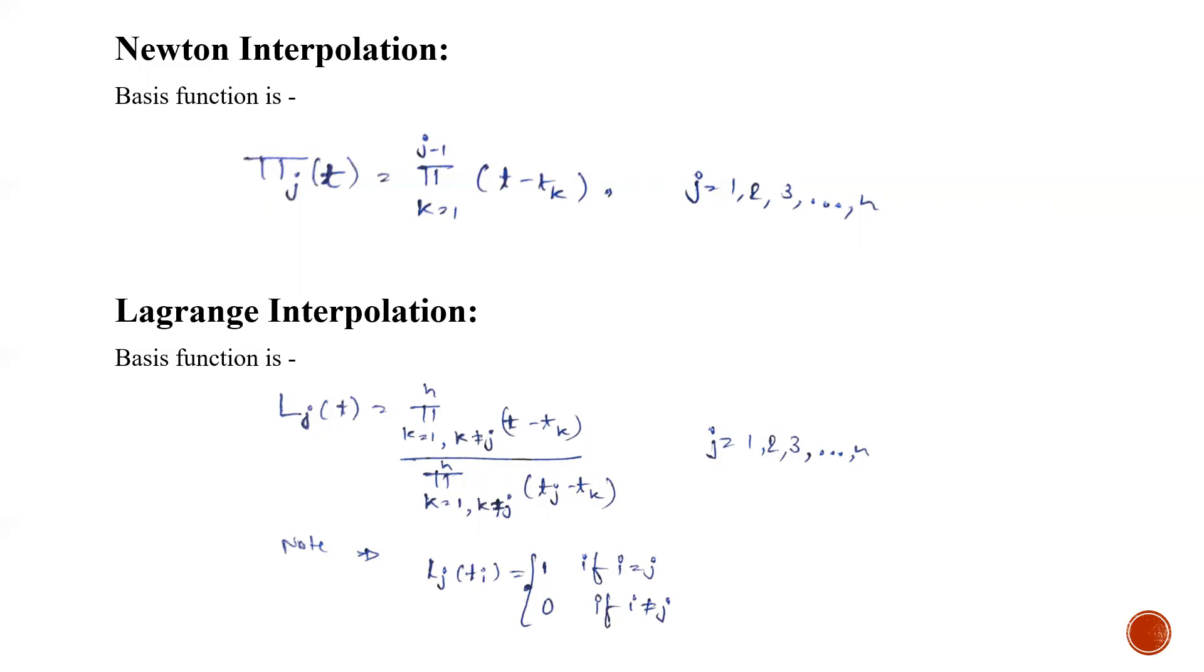The next is Lagrangian interpolation where the basis function is product of (t - tk) for k equals 1 to n divided by product of (tj - tk) for k equals 1 to n where k is not equals to j.